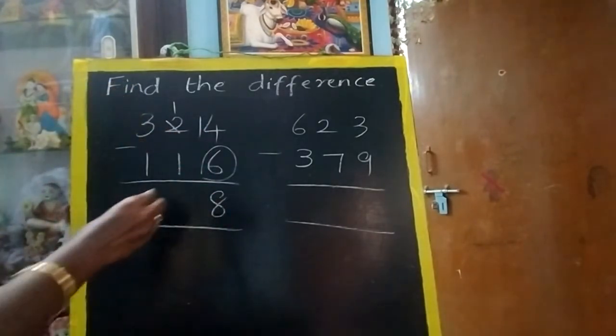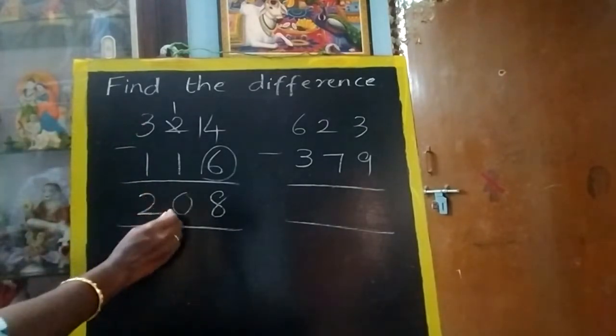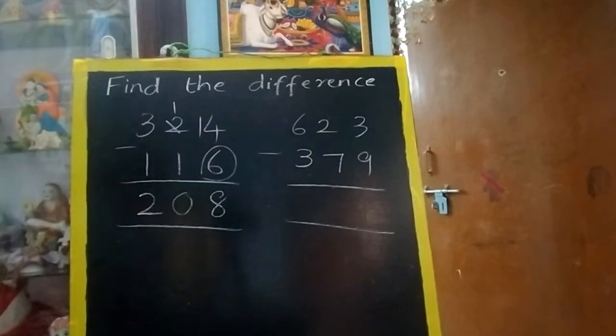Now see, same number. 1 minus 1 equals 0. 3 minus 1 equals 2. You can see borrowing only in 1's place, not in 10's place.